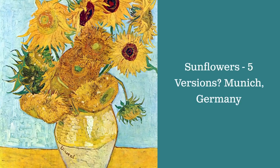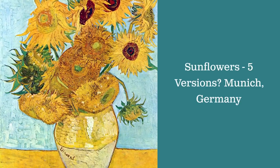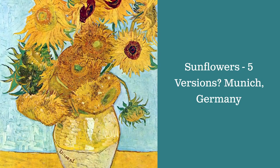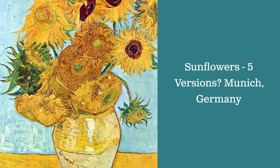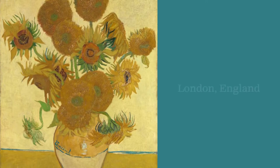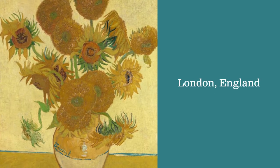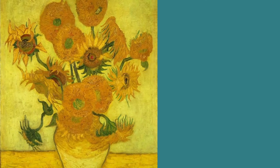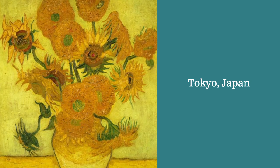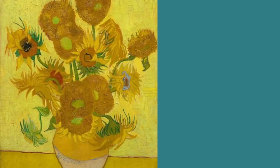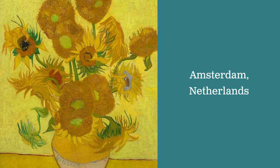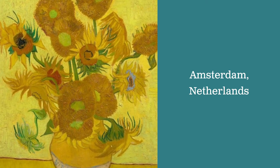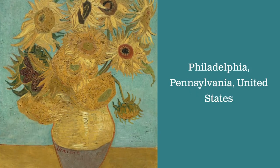We are going to be studying van Gogh's sunflowers paintings. He actually made five versions of the sunflowers paintings. This version is in Munich, Germany. This version of sunflowers is in an art museum in London, England, and this one is in Tokyo, Japan. This version of the sunflowers is in the van Gogh Museum in Amsterdam in the Netherlands.